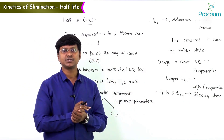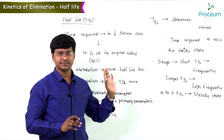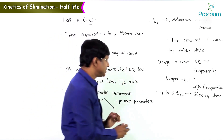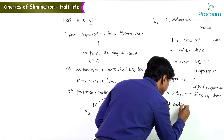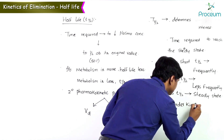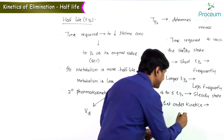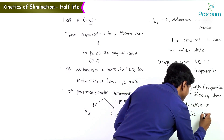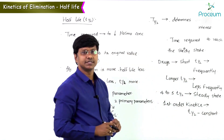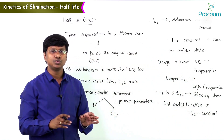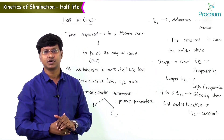If a drug follows first order kinetics, the half-life of the drug is constant. This is true both for rising and for falling plasma concentration.